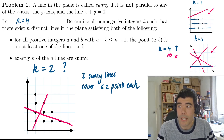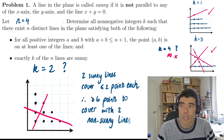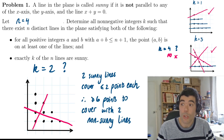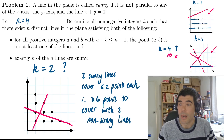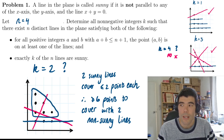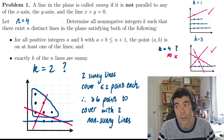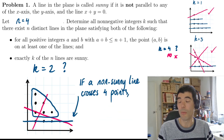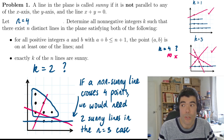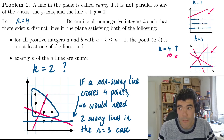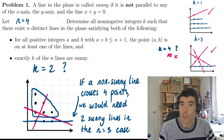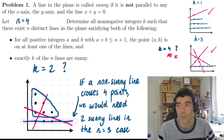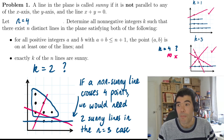When n equals four, no sunny line passes through three or more points. So with two times two equalling four, six more points must be covered by two non-sunny lines. If one non-sunny line goes through four points, you're left with the n equals three sub-triangle above it — and you'd need two sunny lines to satisfy that n equals three case. This holds whether that four-point line is horizontal, vertical, or diagonal: in all three cases you're left with a sub-triangle equivalent to the n equals three case, which I already showed cannot be solved with two sunny lines.